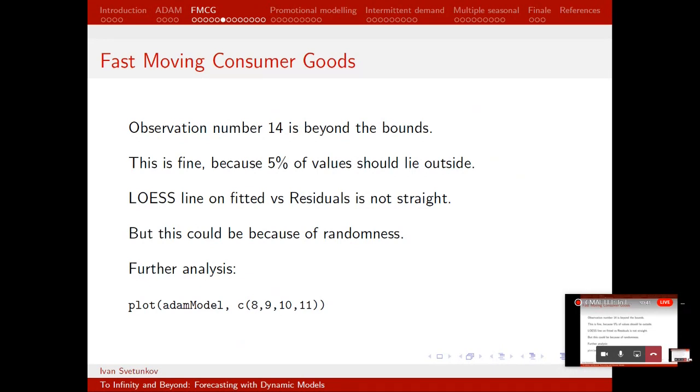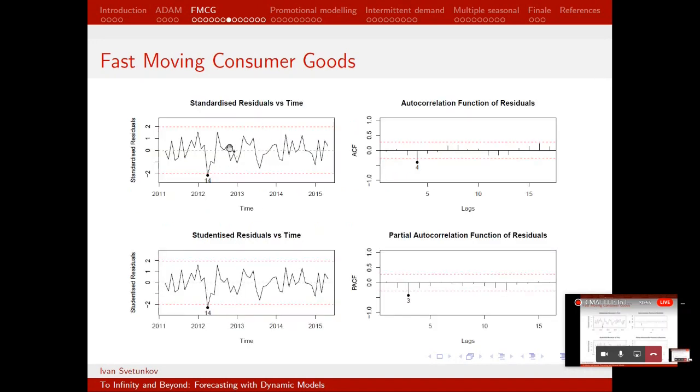We can do further analysis. Actually, this plot function produces 12 different things and you can specify what specifically to plot. So I ask 8, 9, 10, 11. 8 and 9 stand for standardized residuals over time, studentized residuals over time. They're quite similar, so we can just stick with this one, I guess. And 10, 11, autocorrelation function and partial autocorrelation function of residuals. So this one tells me that 14 could have happened by chance, but it is somehow related to the other observations, which are also quite low. ACF and PACF actually don't show anything significant. I mean, there is lag number four, but this could happen at random as well. So I wouldn't bother too much about that. So let's see what happens on observation 14.